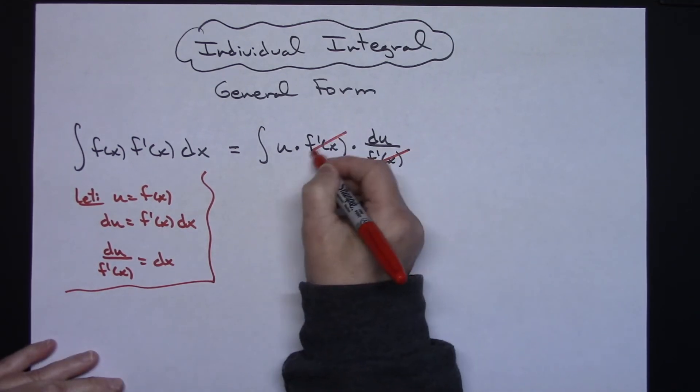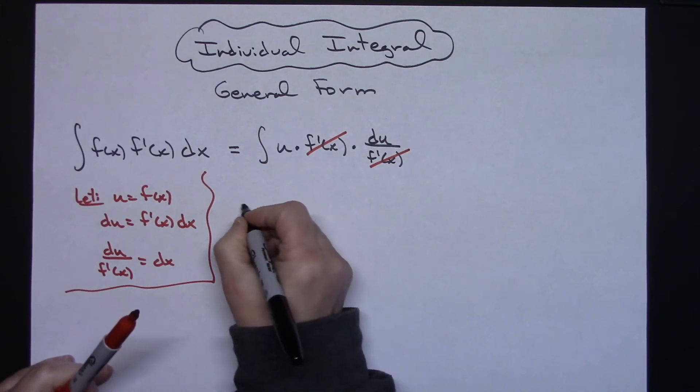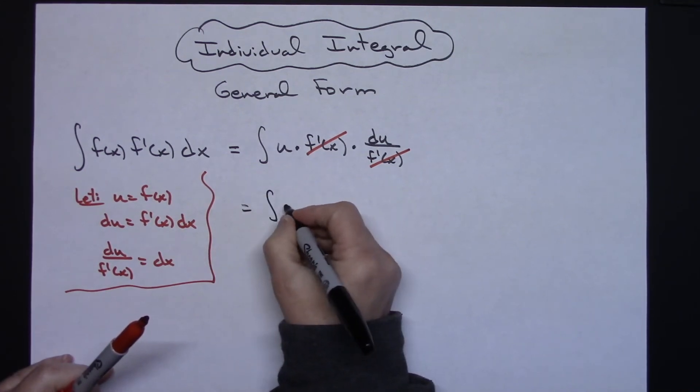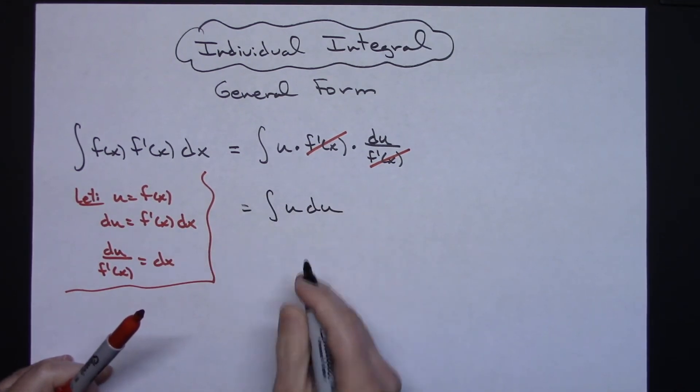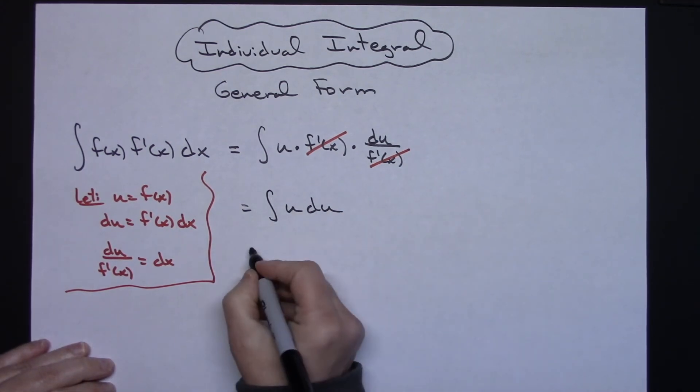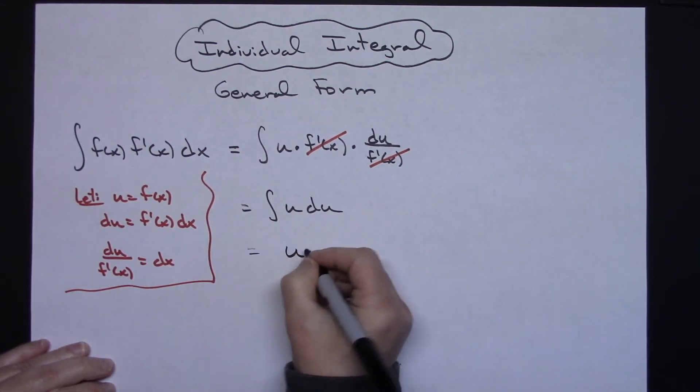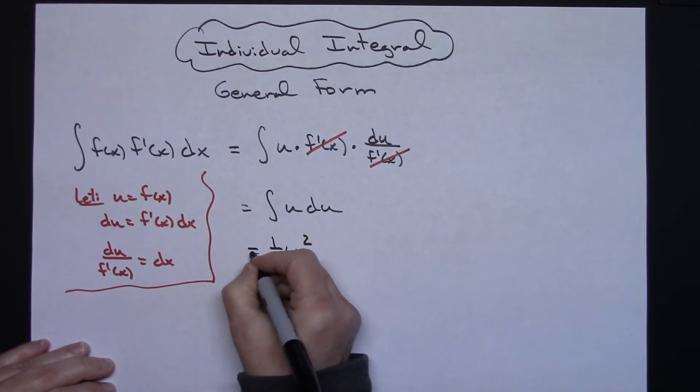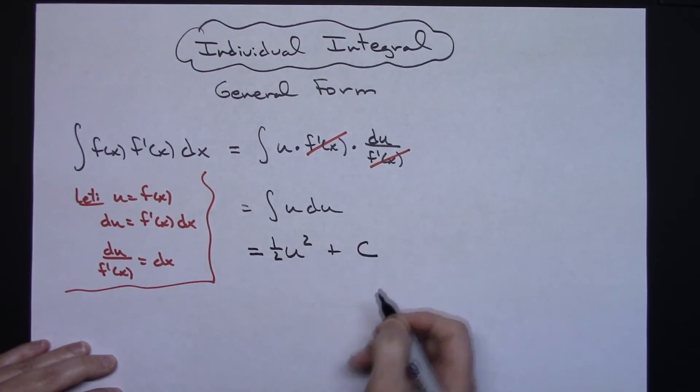That's going to allow me to cross out those f prime of x's, and then I'm going to have just the integral of u du. That becomes a straightforward integral. I've got a one right there so I can add two to it, so I'll have u raised to the second power with the one half out in front and then a plus C.